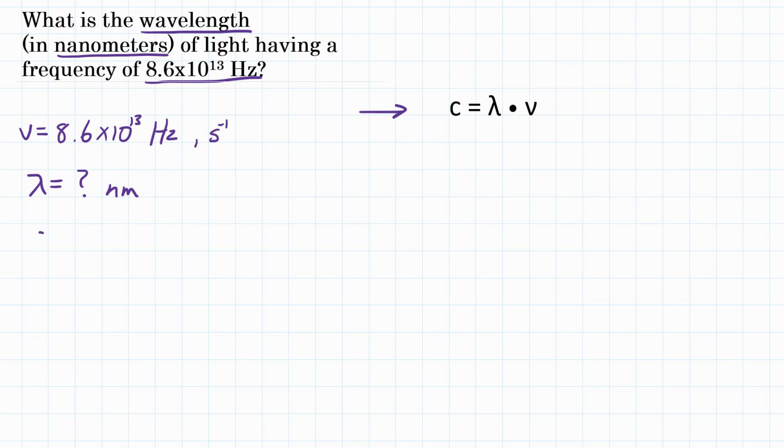So we need c, the speed of light, and that is a constant, which is 3.00 times 10 to the 8th meters per second.